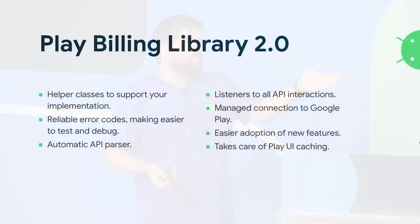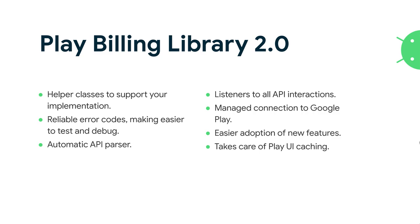You just use the library and all the connection stuff is managed by the Play Billing Library — including retry mechanisms if reconnection is required. And easier adoption of new features: the AIDL interface won't receive any updates anymore. We are improving how the library talks with Google Play Billing. It also takes care of Play UI caching, so you don't need to cache data from Play in your own application.